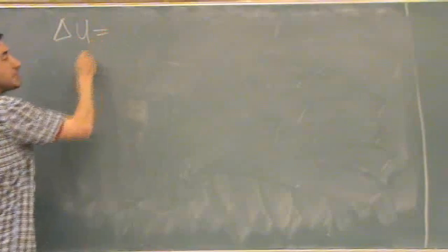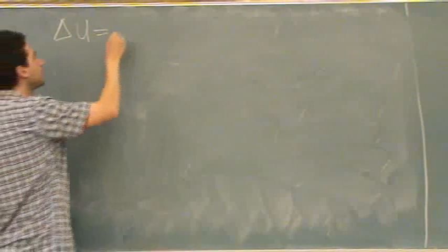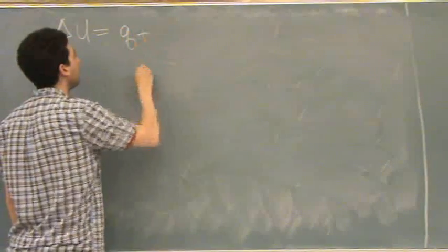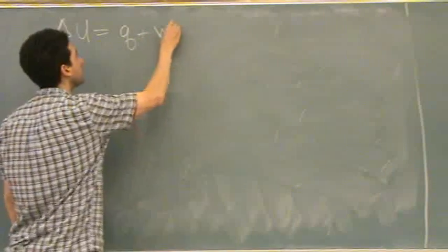So, the first law of thermodynamics says the total energy in a system is equal to the energy of flow. Q plus W are the two terms for energy flow.